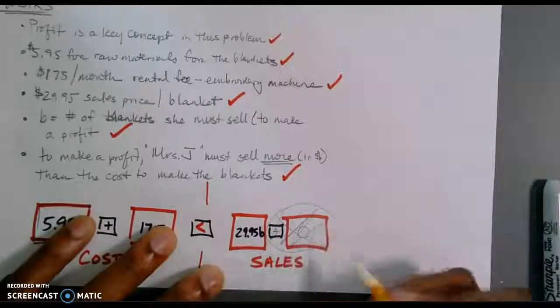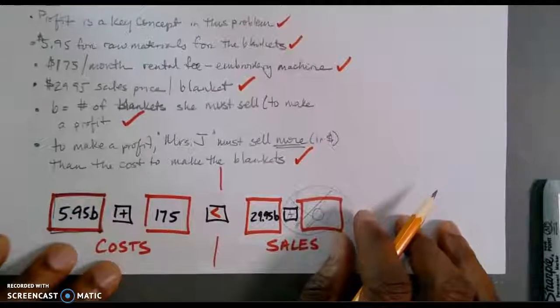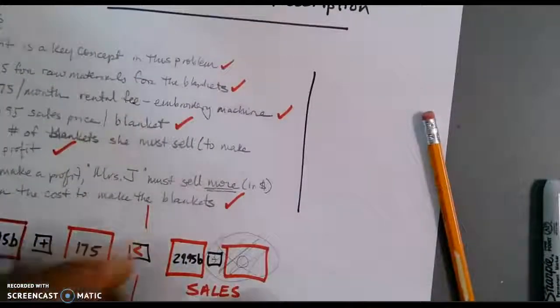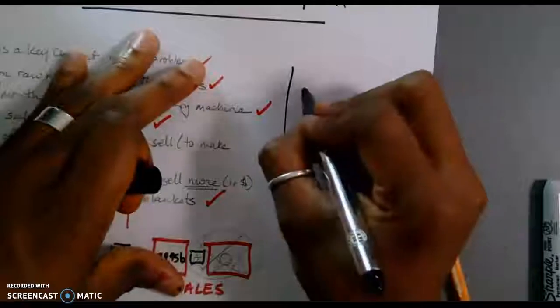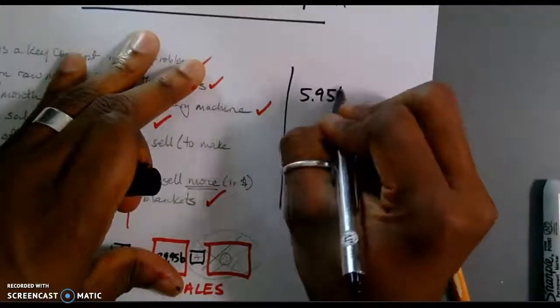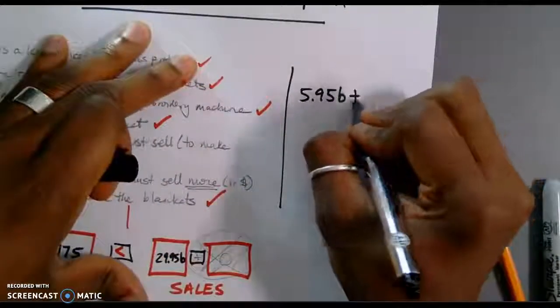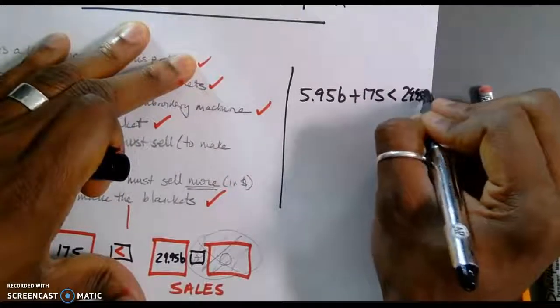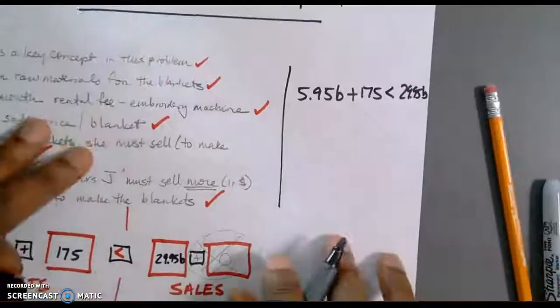We can go ahead and just scratch through that. So, we don't need that. Let's go ahead and rewrite our equation. If we rewrite our equation, that's going to be 5.95B plus 175 must be less than 29.95B.